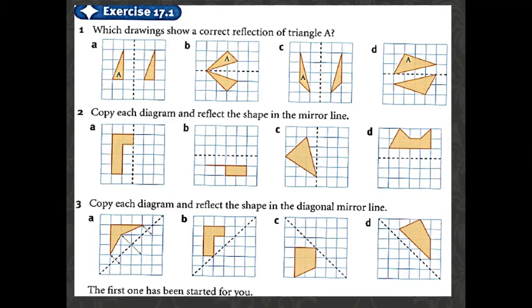Think of it like real life: when you raise your left hand in front of a mirror, the mirror shows your right hand. So the mirror must show the opposite. Here, the correct option shows a right-angle triangle but toward the upper side — that is the right one. Option C is also correct, but D is not, because when you reflect this shape the corner ends up in the wrong position.